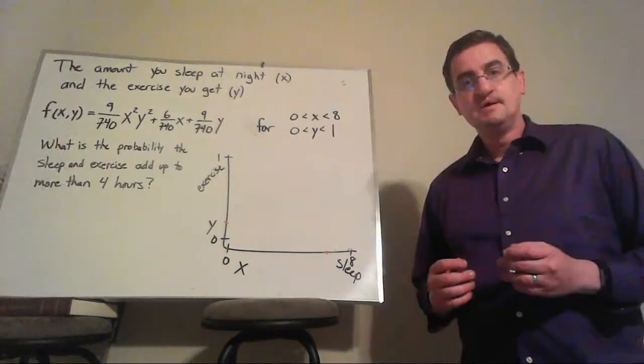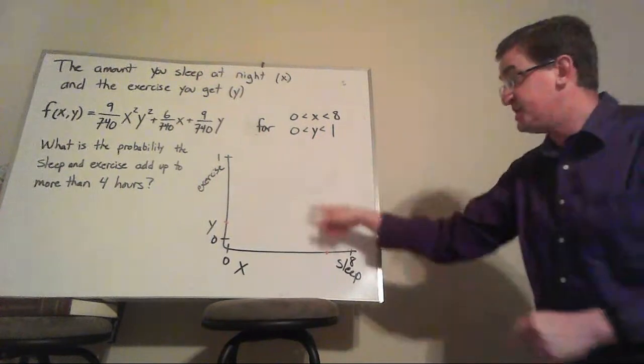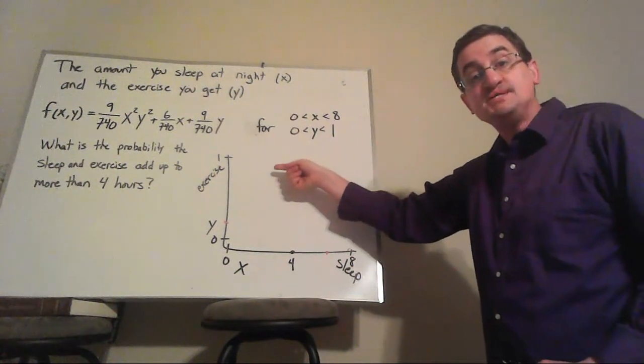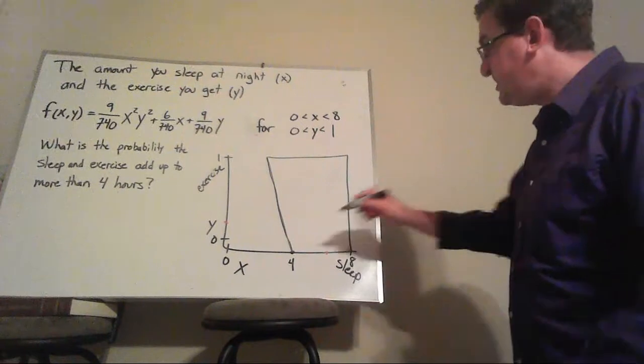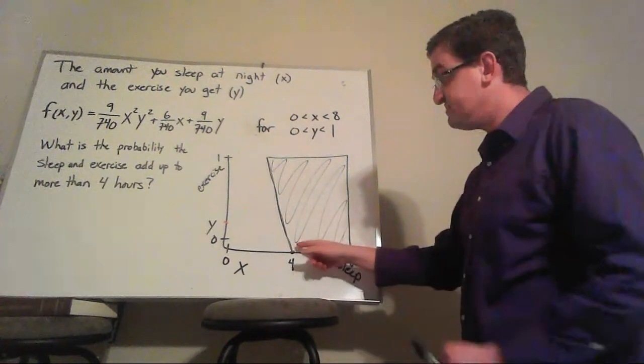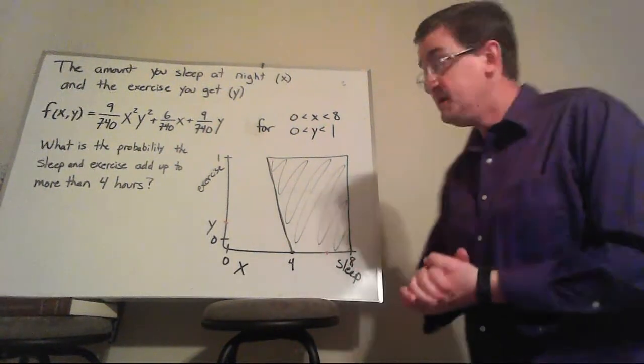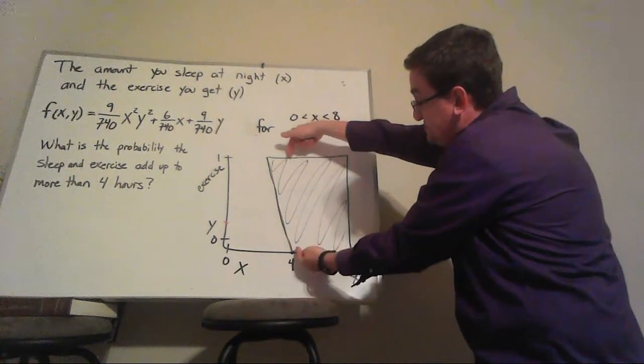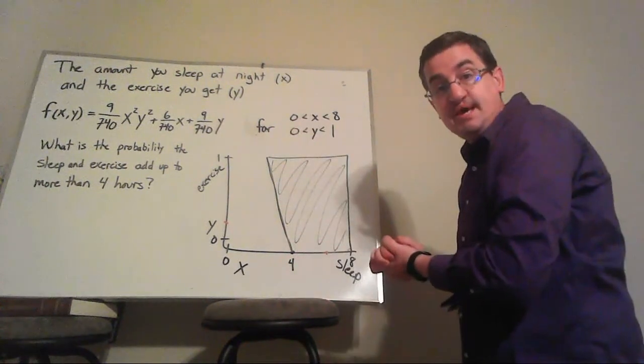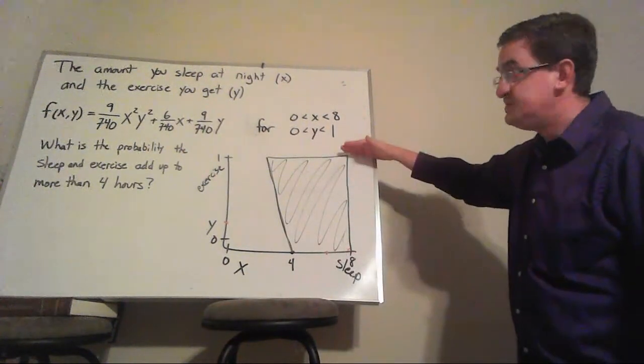We could also do a probability like this. What's the probability that sleep and exercise add up to four hours? That's not going to be a block shape. Maybe the four hours is all sleep and there was no exercise, or we got a full hour of exercise, but only three hours of sleep. So we end up with a shape like this, and everything inside this range is going to count as more than four added up together. This time it's going to matter which order we integrate in because if you're taking up and down slices, then you can do this section, but then you have to stop and change for this section because this slanted line won't be going that way anymore.